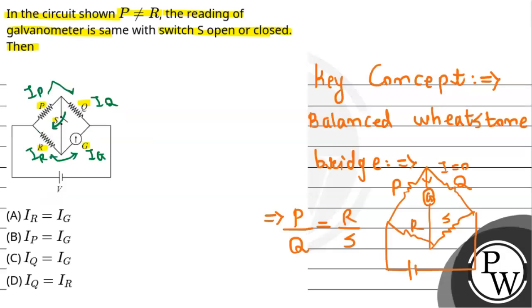According to the Wheatstone bridge condition, we can clearly say that the current will be zero.